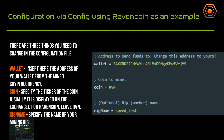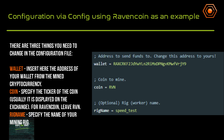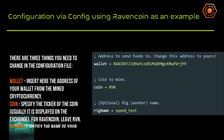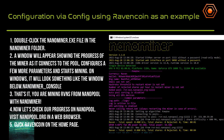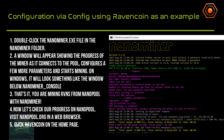Coin: specify the ticker of the coin — it is usually displayed on the exchange. For RavenCoin, leave it as RVN. Rig name: specify the name of your mining rig. Double-click the NanoMiner executable in the NanoMiner folder. A window will appear showing the miner connecting to the pool, configuring parameters, and starting to mine. That's it — you are mining RavenCoin with NanoMiner.